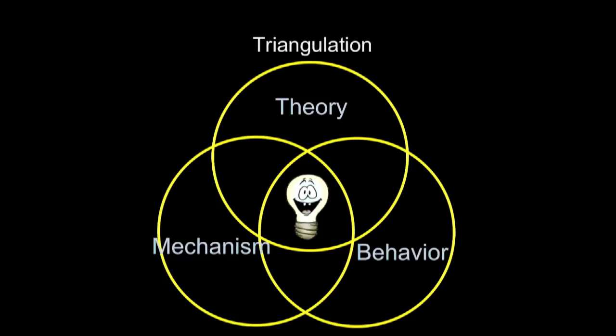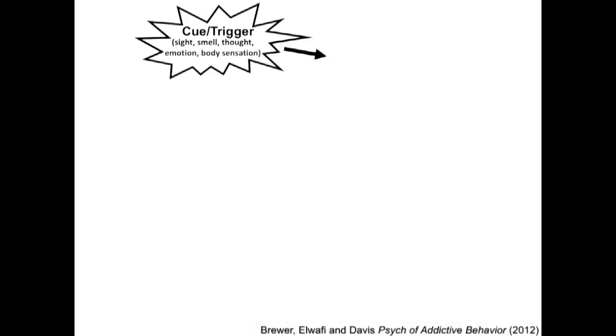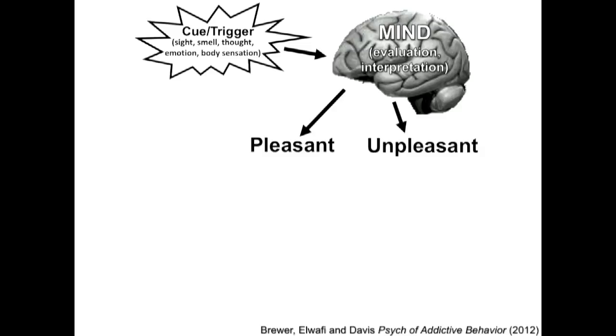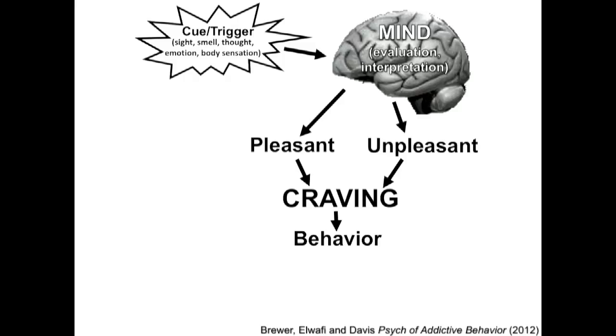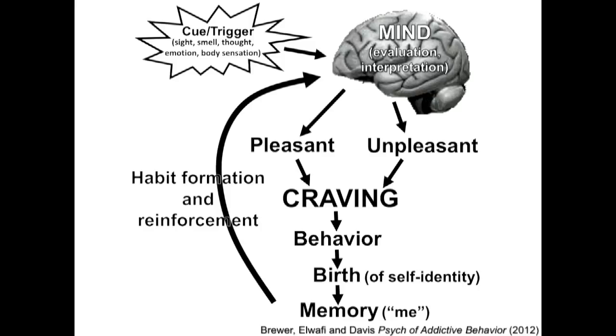Let me give an example of triangulation with regard to theory. The early Buddhist psychologists, as far back as the Pali canon in the Theravadan tradition — the early historical teachings of the Buddha — described a concept called dependent origination. In simplified form: a cue comes into the mind, gets interpreted as pleasant or unpleasant, then a craving arises. We want the pleasant to continue and the unpleasant to go away. This leads to a behavior — described in Buddhist language as the birth of a self-identity — which then gets reinforced over and over.